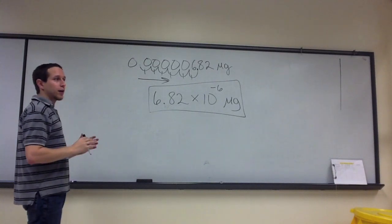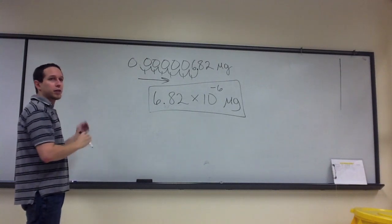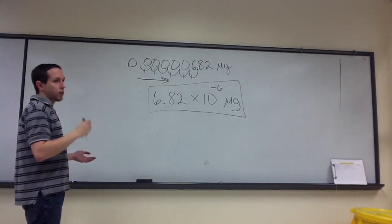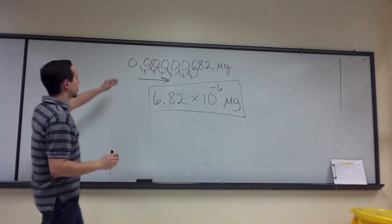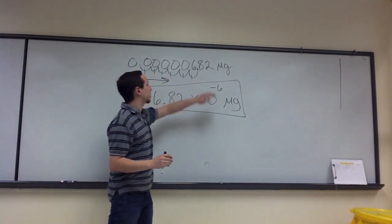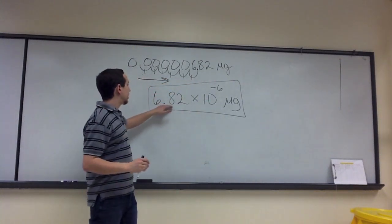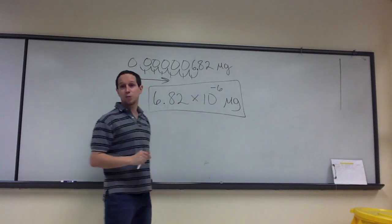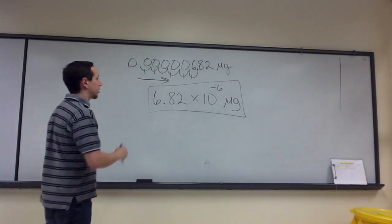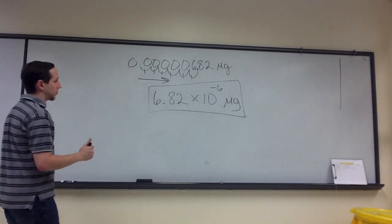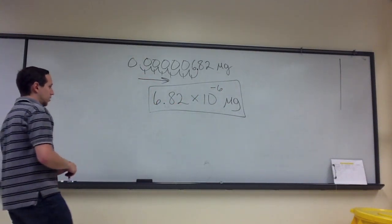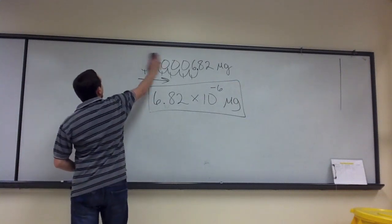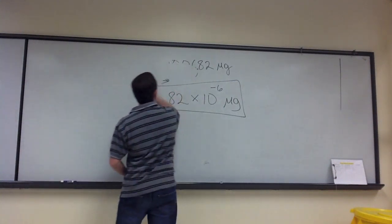This is much easier, I think, than the conversions we were doing between one subunit and another, because it really is just pushing the decimal, setting the number up appropriately, and then making sure your exponent has the correct sign — positive or negative. One more example and we'll be done with scientific notation.